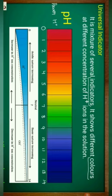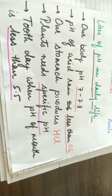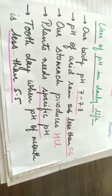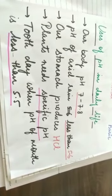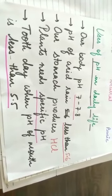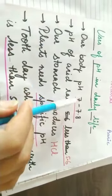These are the uses of pH in our daily life. Why pH is so important in our daily life? Our body has pH 7 to 7.8. In our body there is also a pH balance, and the balance of pH is very important. We should maintain the balance of pH from 7 to 7.8.